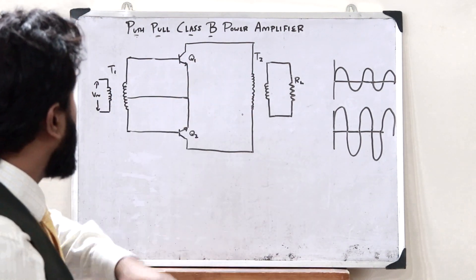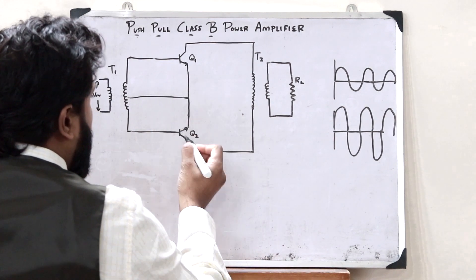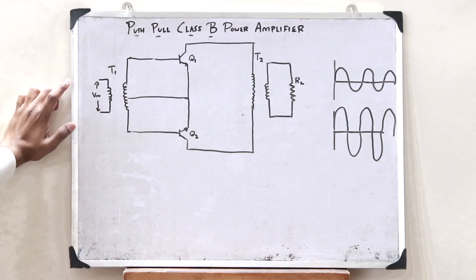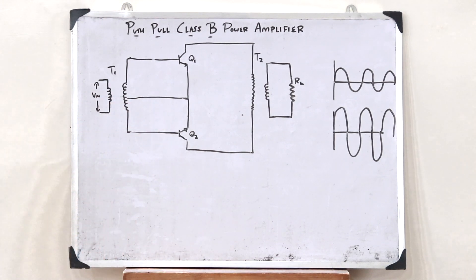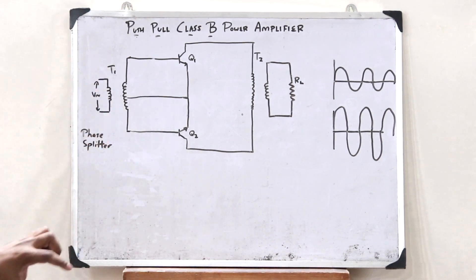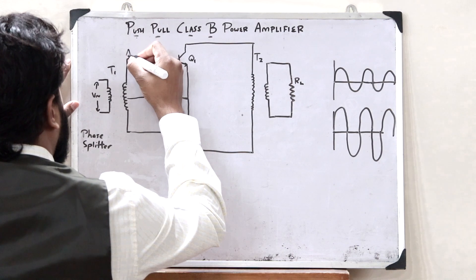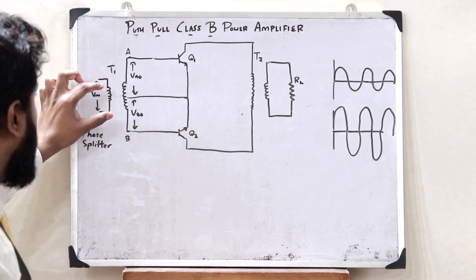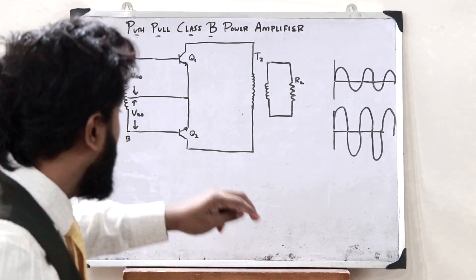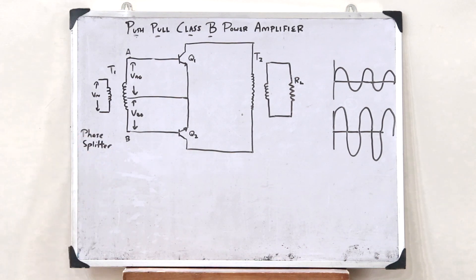Here is a circuit diagram of a push-pull class B power amplifier. We can see that there are two transistors, Q1 and Q2. The input signal is given through a transformer called T1, where this is the primary winding and this is the secondary winding. This transformer T1 is also known as a phase splitter, because it splits the input signal into two halves — VAO and VBO — where VAO is exactly 180 degrees phase shifted with VBO.